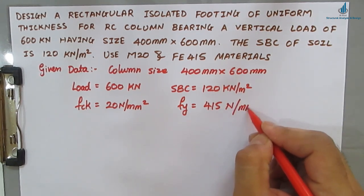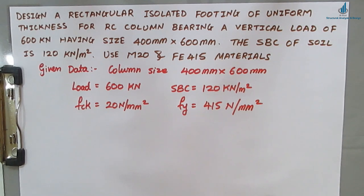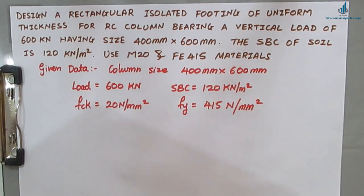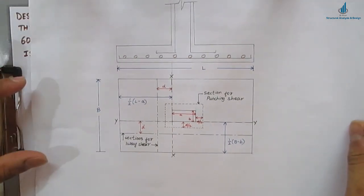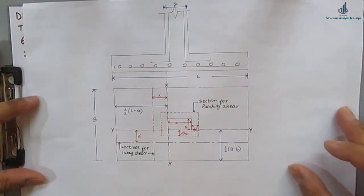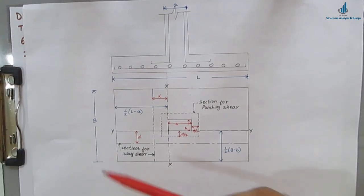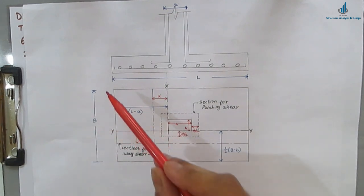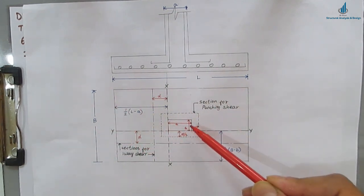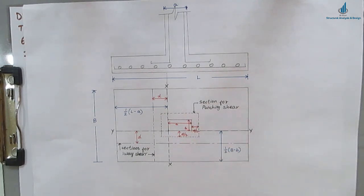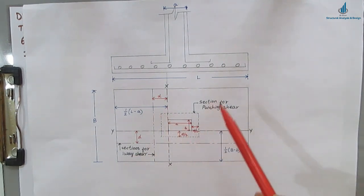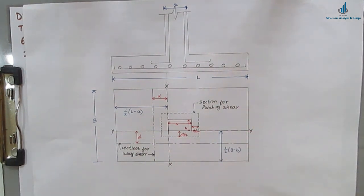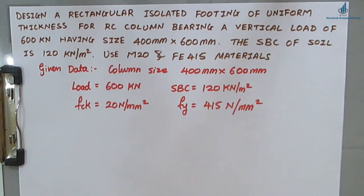Before moving on to the problem, I will show you the footing sketch and how we are going to proceed. This is the sketch of the footing: dimension B and dimension L, column size a and column size b. We will follow this pattern for one-way shear and punching shear. This figure is very important for the further calculations.